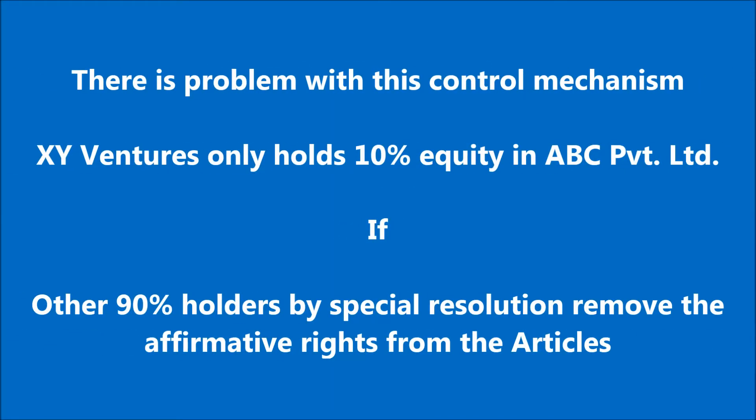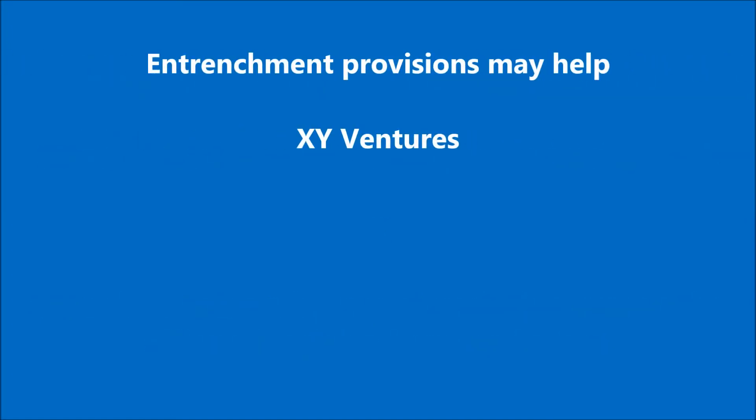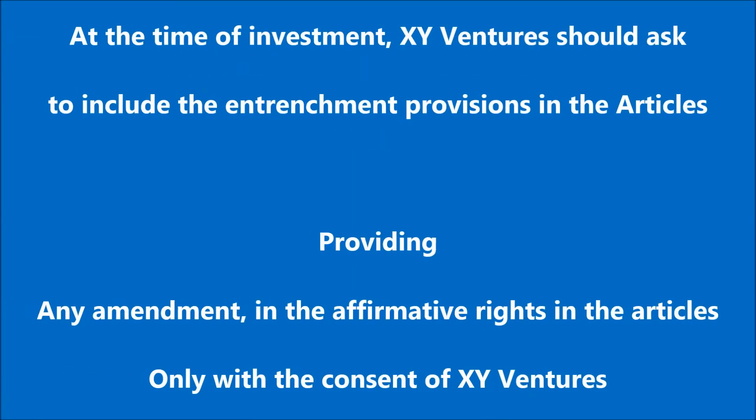But there is a problem with this control. XY Ventures only holds 10% of ABC Private Limited. If after the investment, other shareholders of ABC Private Limited amend the articles and remove the affirmative rights, then XY Ventures will not be able to have control over the affairs of the company. Entrenchment provisions would help XY Ventures in this case. While making the investment, XY Ventures should ask ABC Private Limited to include entrenchment provisions in its articles.